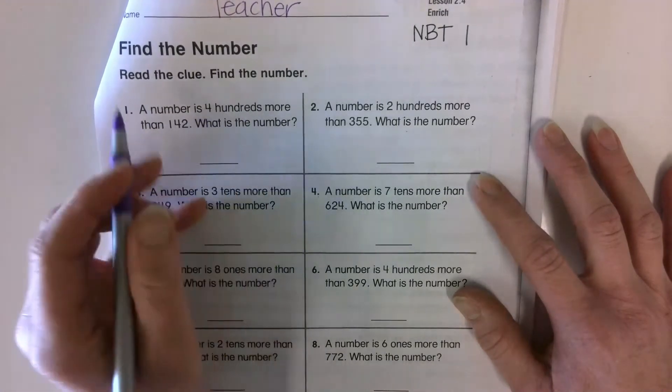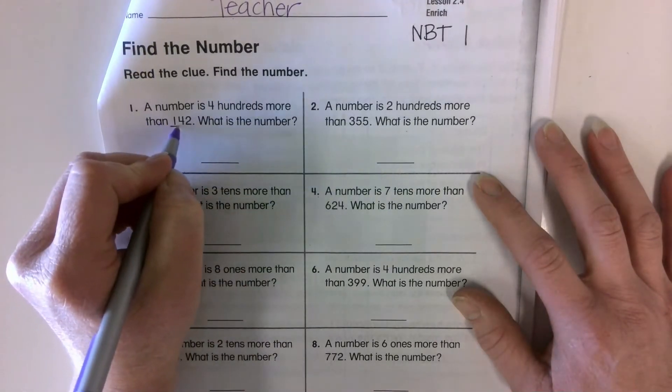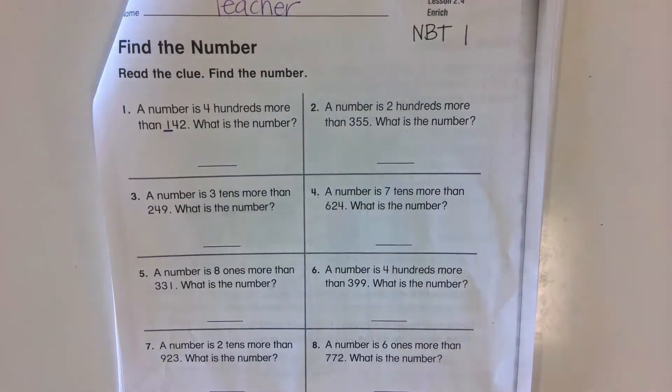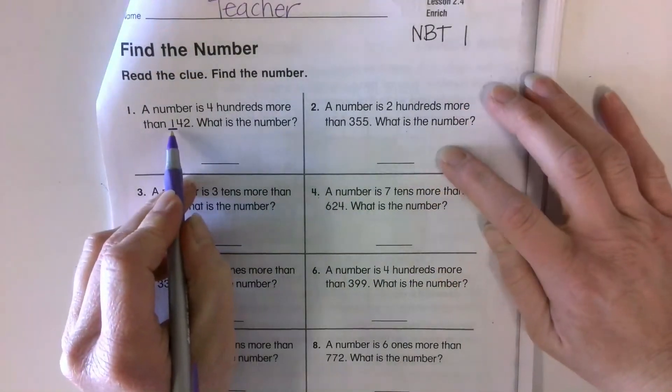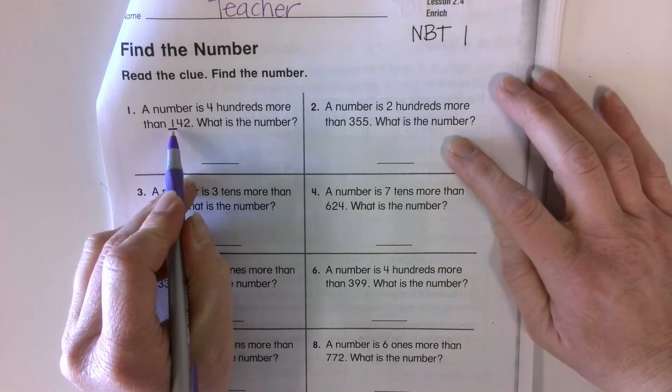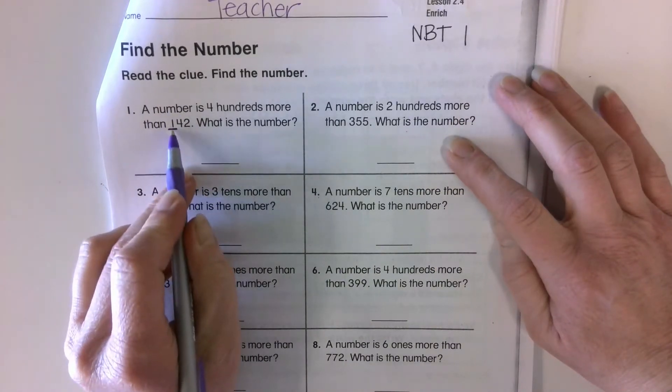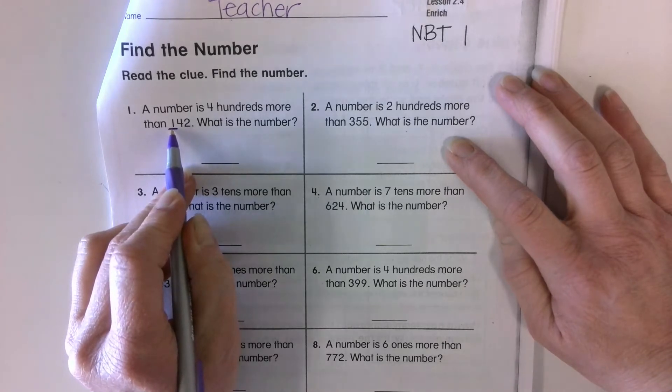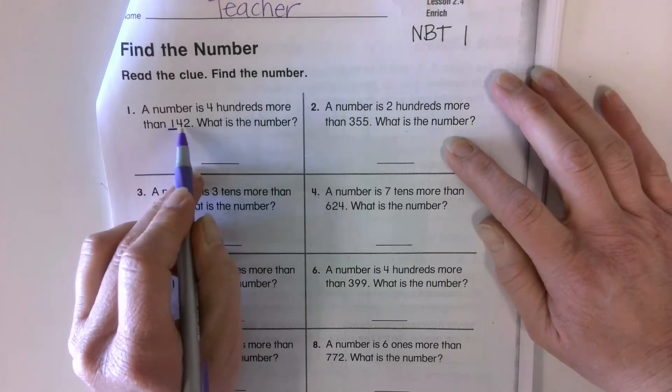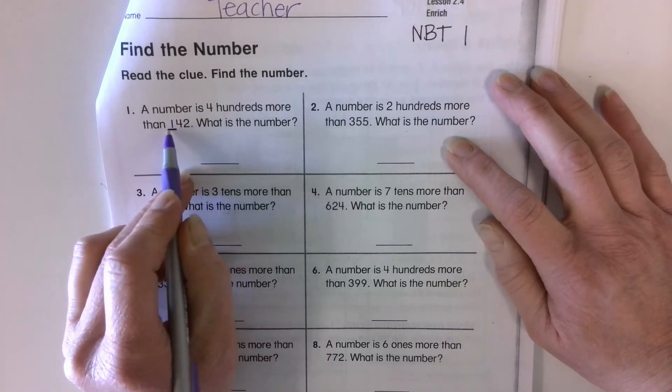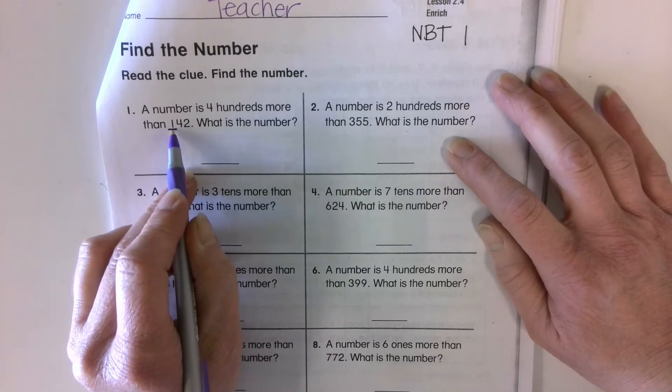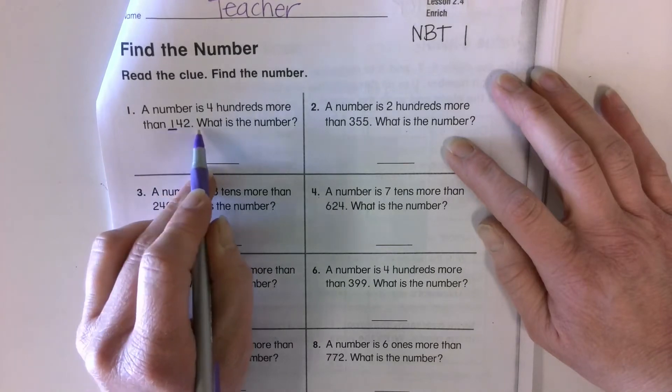Well, it's four hundredths more. So I'm going to underline the hundredths spot. And then I'm going to add four to this digit. And if I add four to this digit, I'm going to end up with five. My four and two are going to stay the same. I'm only dealing with the hundredths spot. So this is going to be 542.